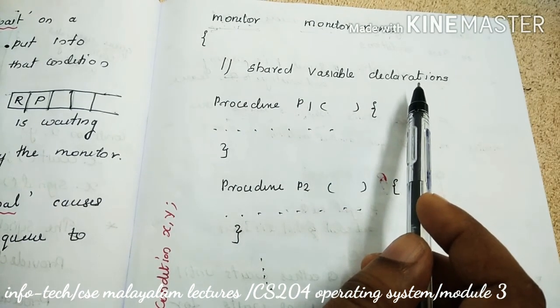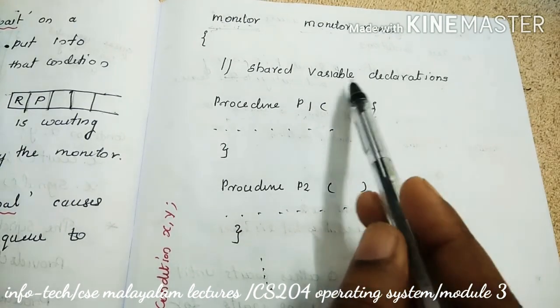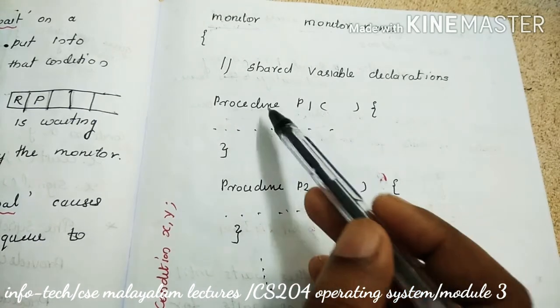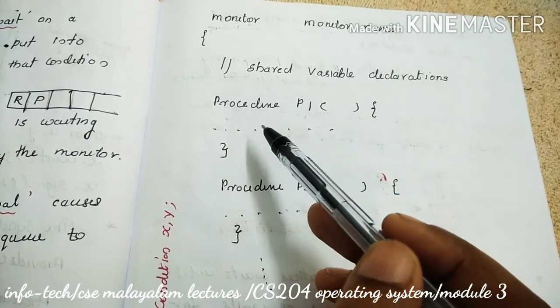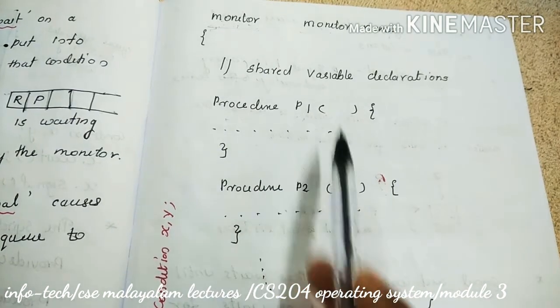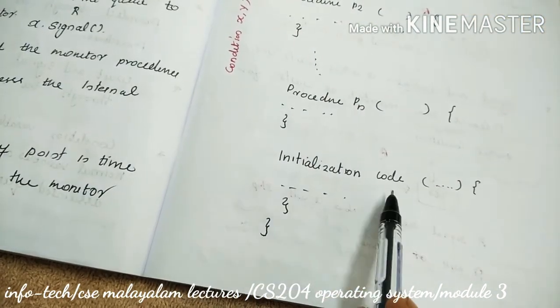Then curly braces, and here we can declare the shared variables declaration. Whatever variable we can use here and some condition variables also you can mention here. Thereafter, we can use the procedures one by one. These procedures are simply the critical section regions. Here is procedure one, procedure two, and procedure n. And at last, there is initialization.